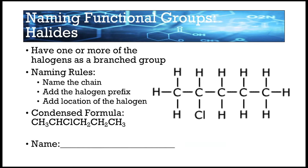When we're naming functional groups, the first one is halides. Halide looks like the term halogen — those are things in group 17, like iodine, chlorine, fluorine, bromine, and so on. Here's an example of a compound with a halide on it. You can see that we have a chlorine added to it, and chlorine is part of group 17.